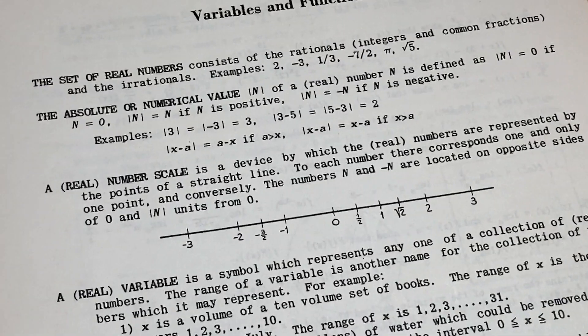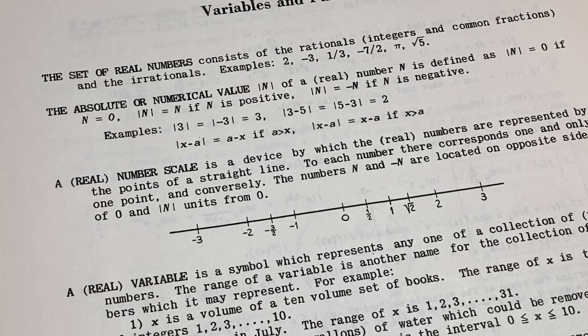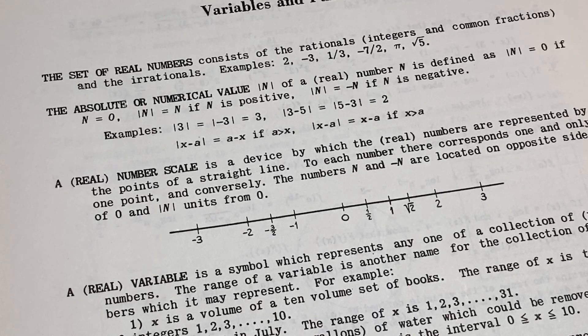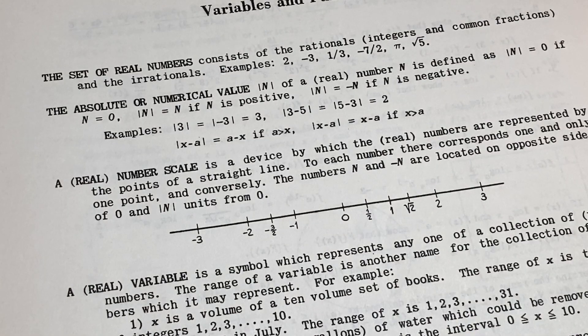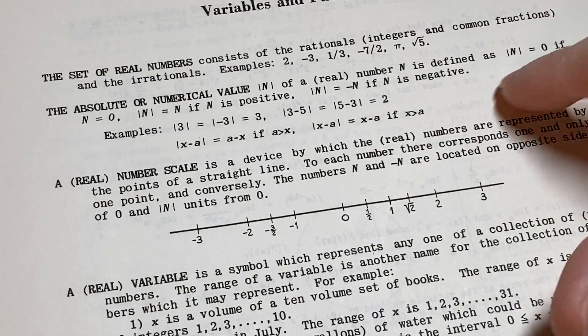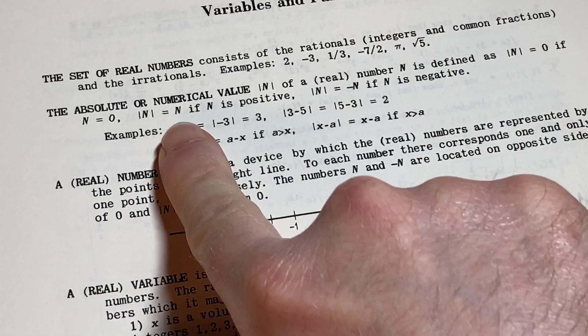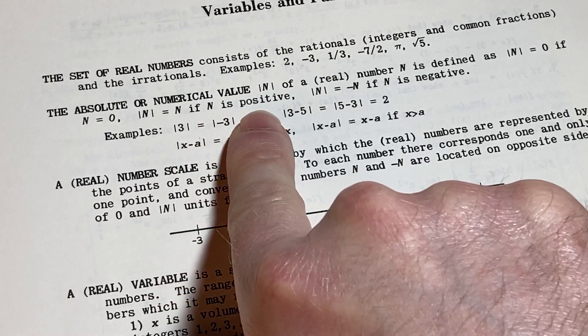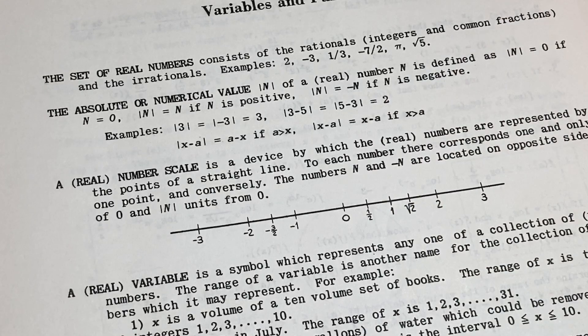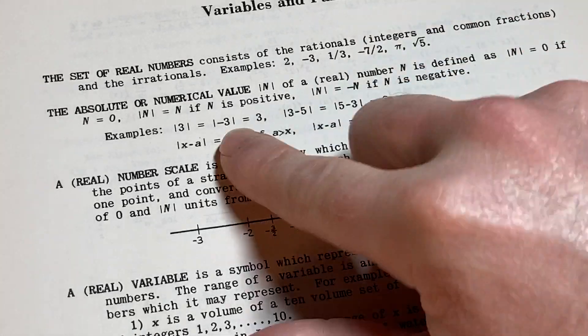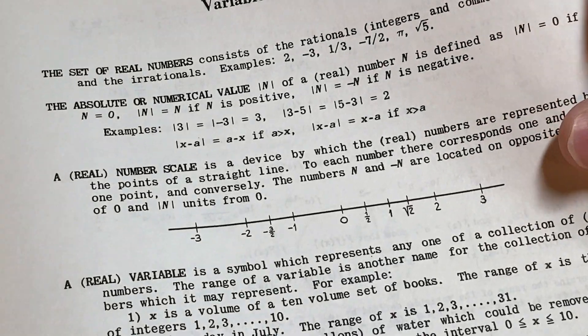Let's see what the next line says. The absolute or numerical value. The absolute value of n of a real number n is defined as 0 if it's 0, n if n is positive, negative n if n is negative. That's a good way to do it. You can certainly define it that way. You can also use a weak inequality. You can say it's going to be n if n is greater than or equal to 0, and it'll be negative n if n is less than 0.